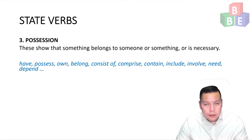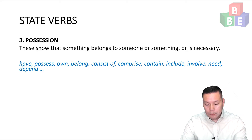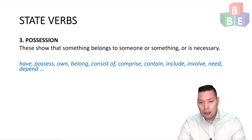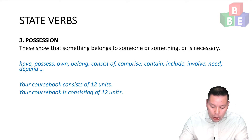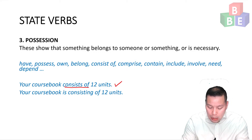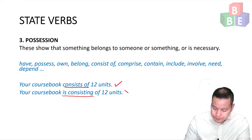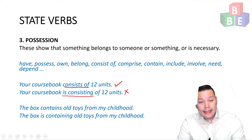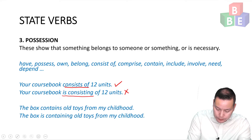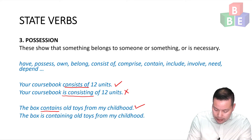The third group of state verbs is possession. These show that something belongs to someone or is necessary. For example, have, possess, own, belong. Your course book consists of 12 units — this is correct. Your course book is consisting of 12 units — this is incorrect. Another example: This box contains old toys from my childhood — correct. The box is containing old toys from my childhood — incorrect.